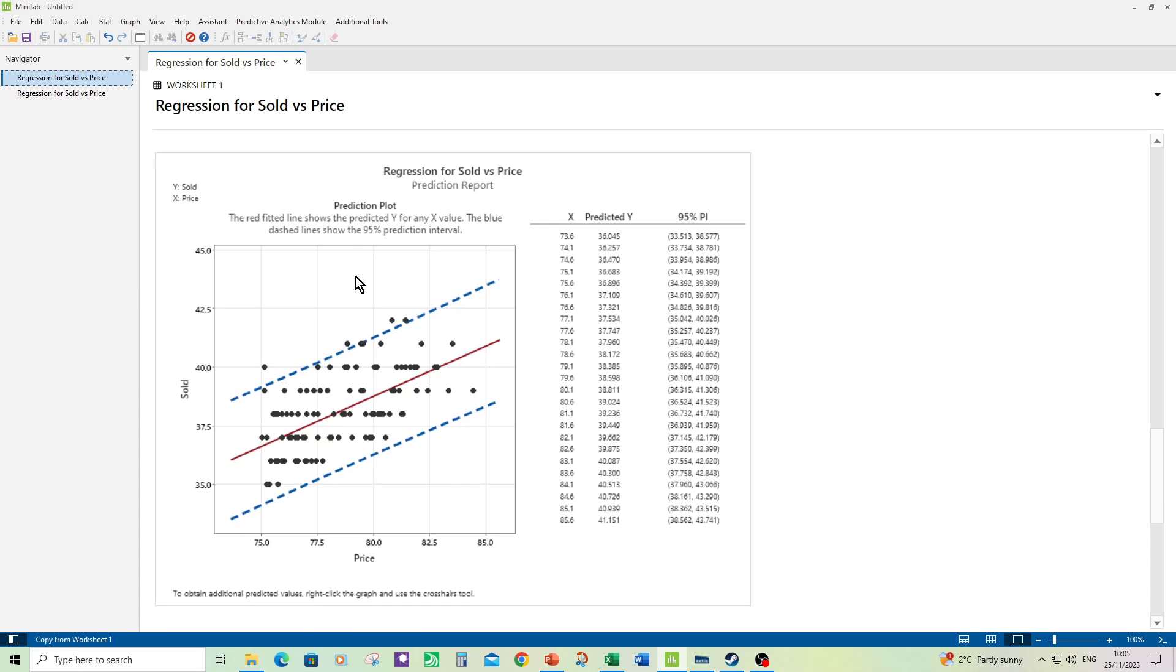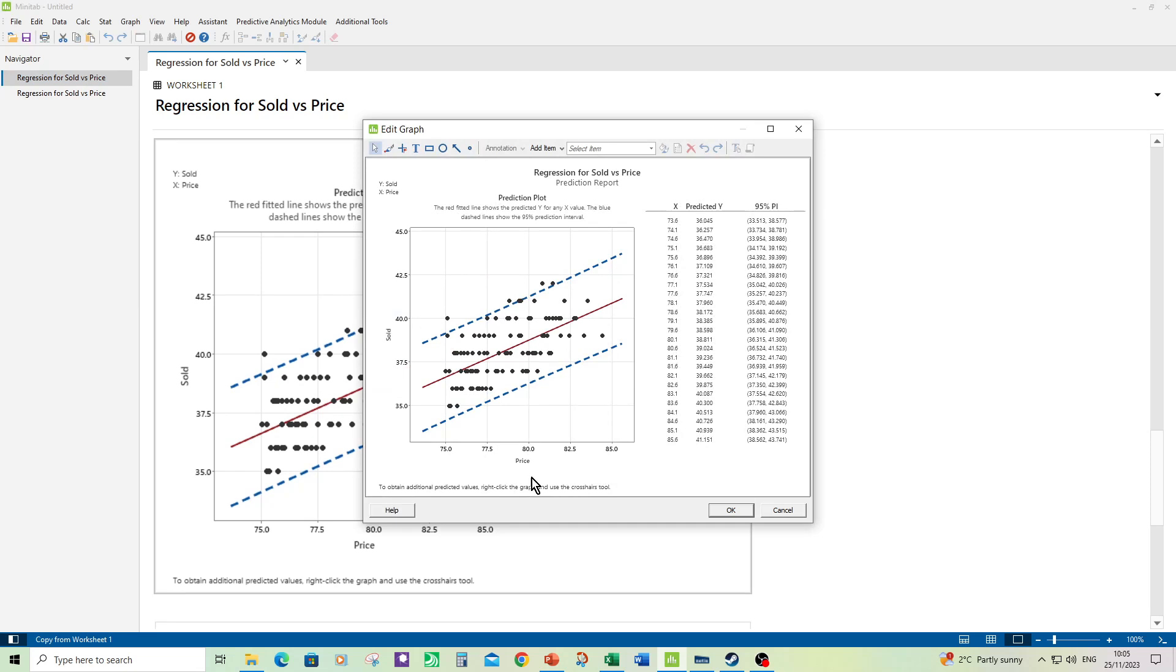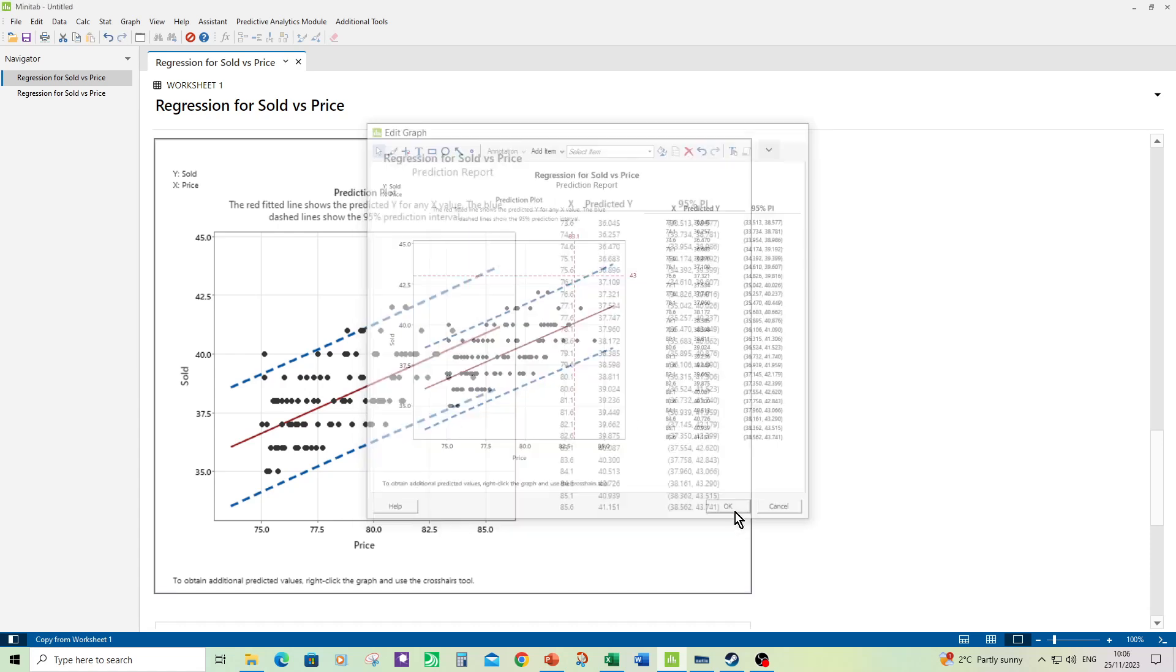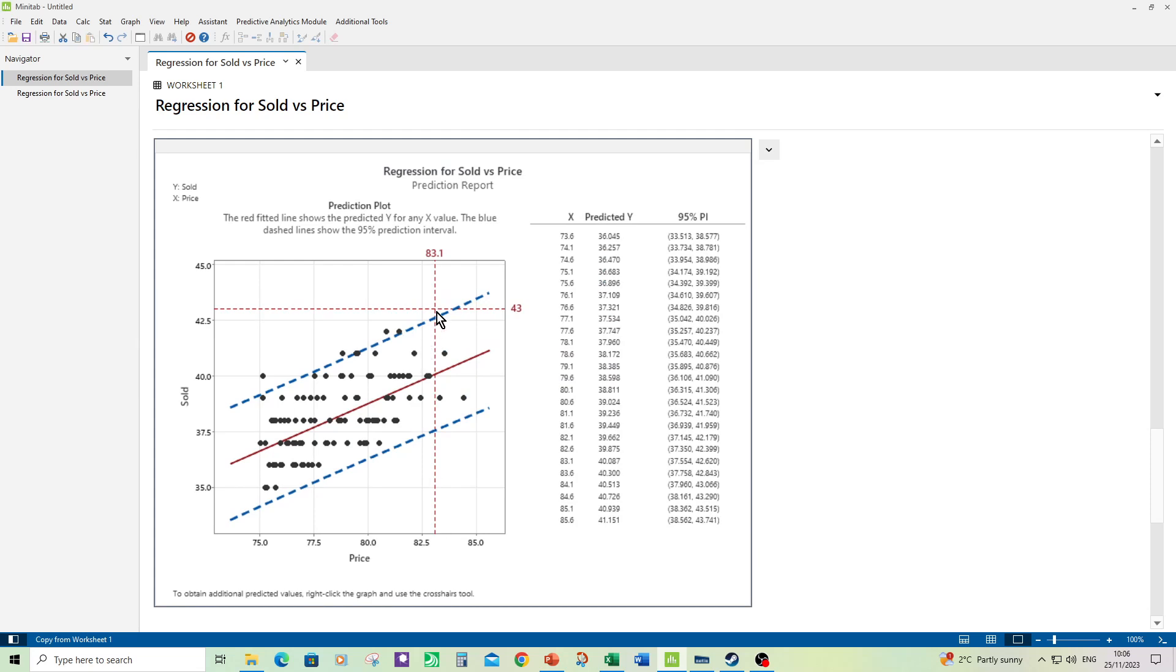And what we can do is we can draw reference lines on the prediction report and see if those lines lie within the prediction interval. Double click to open up the editor. Right click on the graph and then go to add reference lines. So we want a y value of 43 and an x value of 83.1. Click OK. Click OK again to enlarge it. So the intersection point is a price of 83.1 and 43 dishes sold in two days. And we can see that's outside of the prediction interval. So the restaurant is unlikely to sell that many dishes at a price of 83.1.